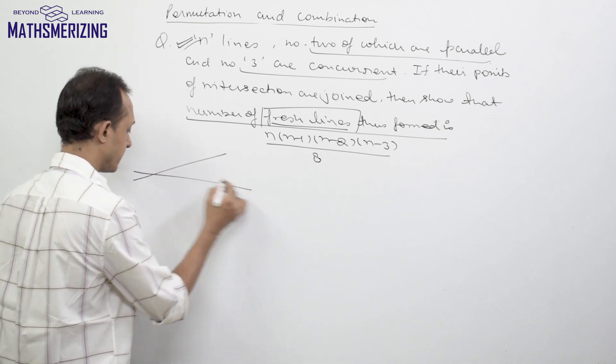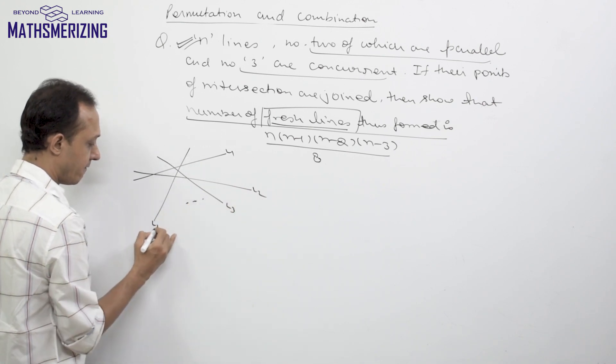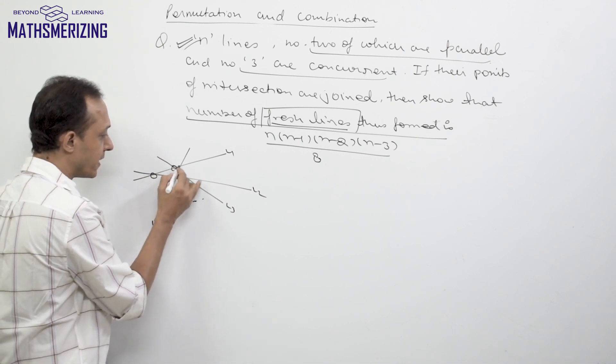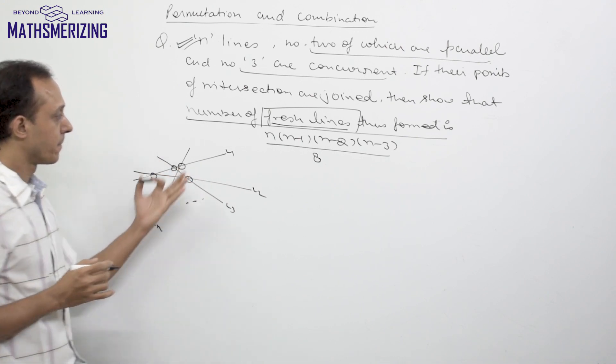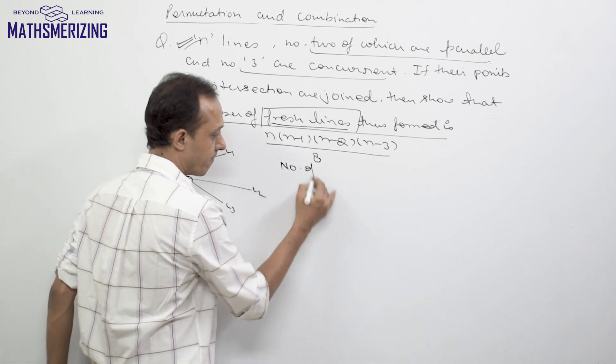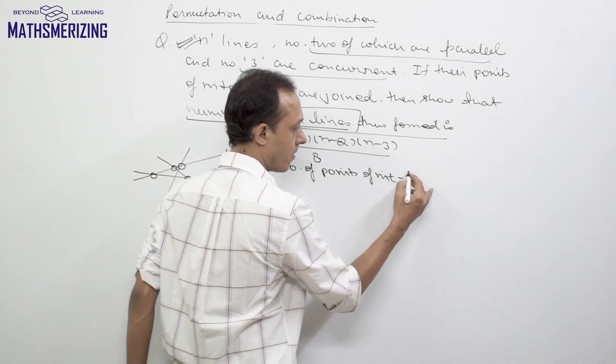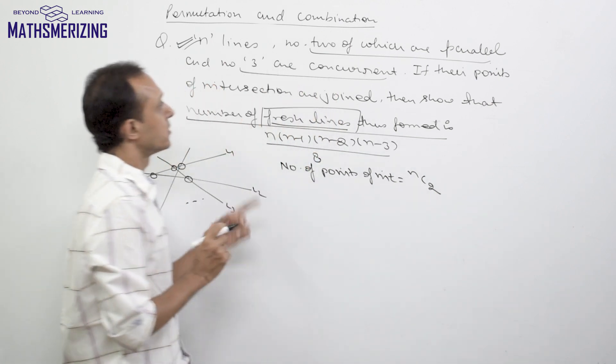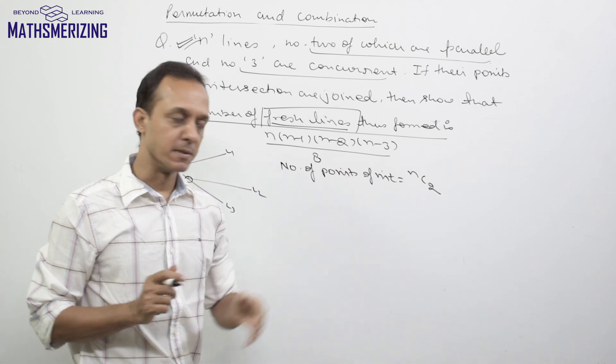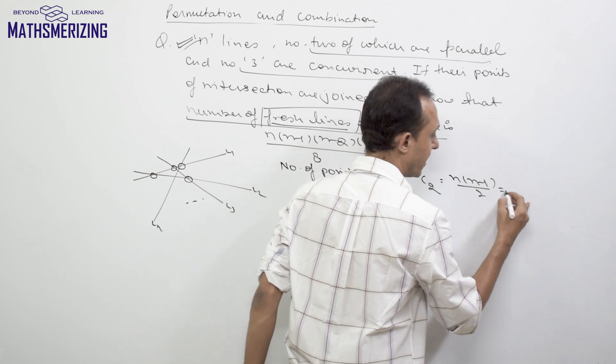We have n lines: l1, l2, l3, and then ln. First we will find out how many points of intersections are there in this given condition. The number of points of intersection will be nC2, because no 2 lines are parallel and no 3 of them are concurrent. So the number of points of intersection will be simply nC2, which is n(n-1)/2.